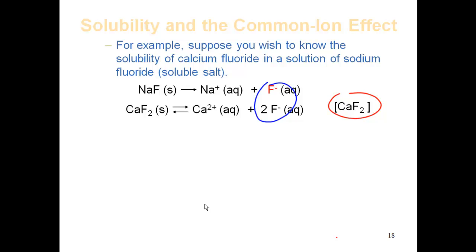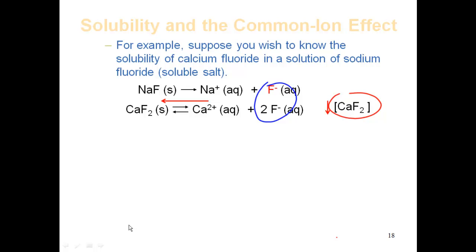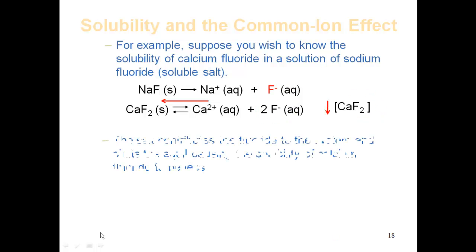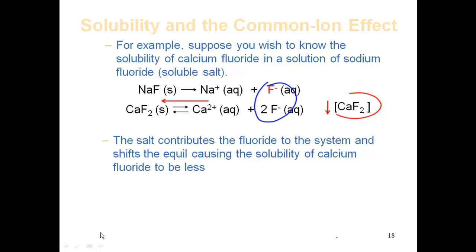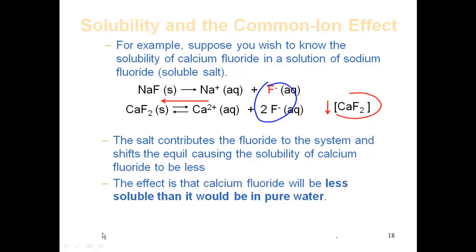Since I have an excess of fluoride, the equilibrium is going to shift to the left. When I shift to the left, some of that soluble calcium and fluoride in solution will combine to form more calcium fluoride solid. Hence, the molar solubility of calcium fluoride will go down — less than 2.0×10⁻⁴ molarity in the presence of sodium fluoride compared to pure water. The salt contributes fluoride to the system and shifts the equilibrium, causing the solubility of calcium fluoride to be less.